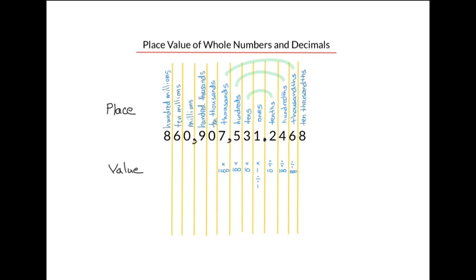Let's now fill in the rest of the places and values: hundred thousands, millions, ten millions, hundred millions, and so on. Another way to get the value of the tenths digit is to multiply by one over ten — it's the same as dividing by ten. Similarly, for the hundredths digit, multiply by one over a hundred; for the thousandths digit, multiply by one over a thousand. For the ten-thousandths digit, dividing by ten thousand is the same as multiplying by one over ten thousand, and we can pair up the ten-thousands digit with the ten-thousandths digit.